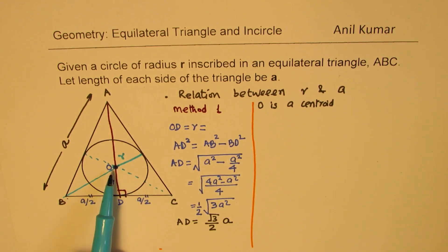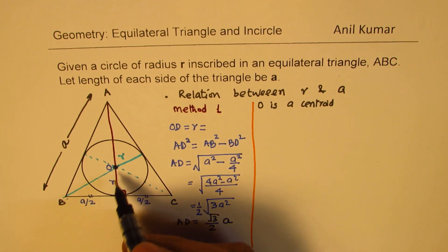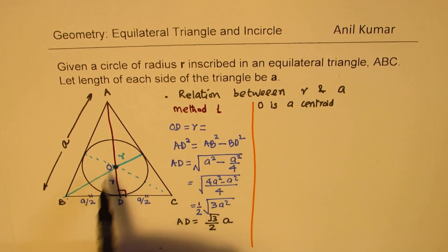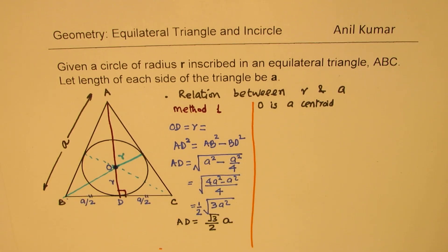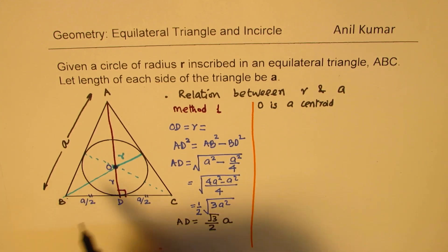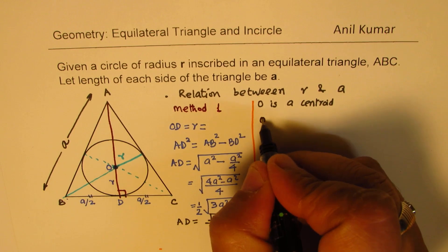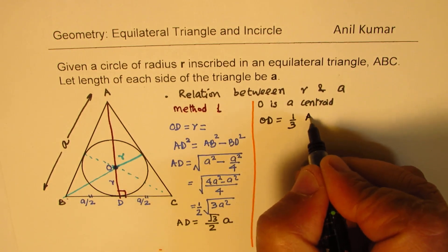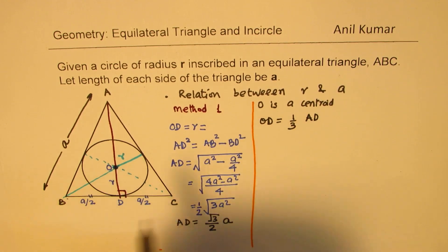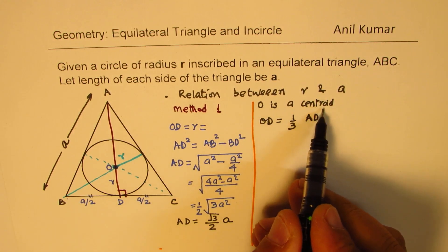Now, the important thing here is that the centroid divides AD in the ratio of 2 is to 1. So it divides into the ratio of 2 is to 1. So this OD is basically one third of AD. And that is important to understand from the property of centroid.